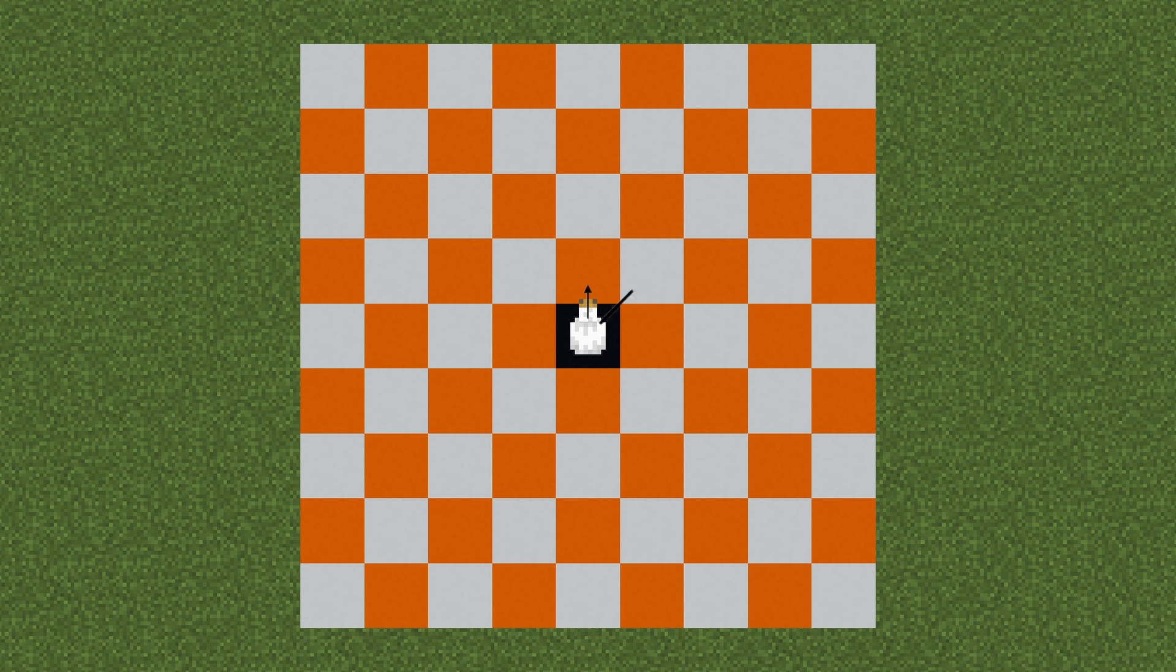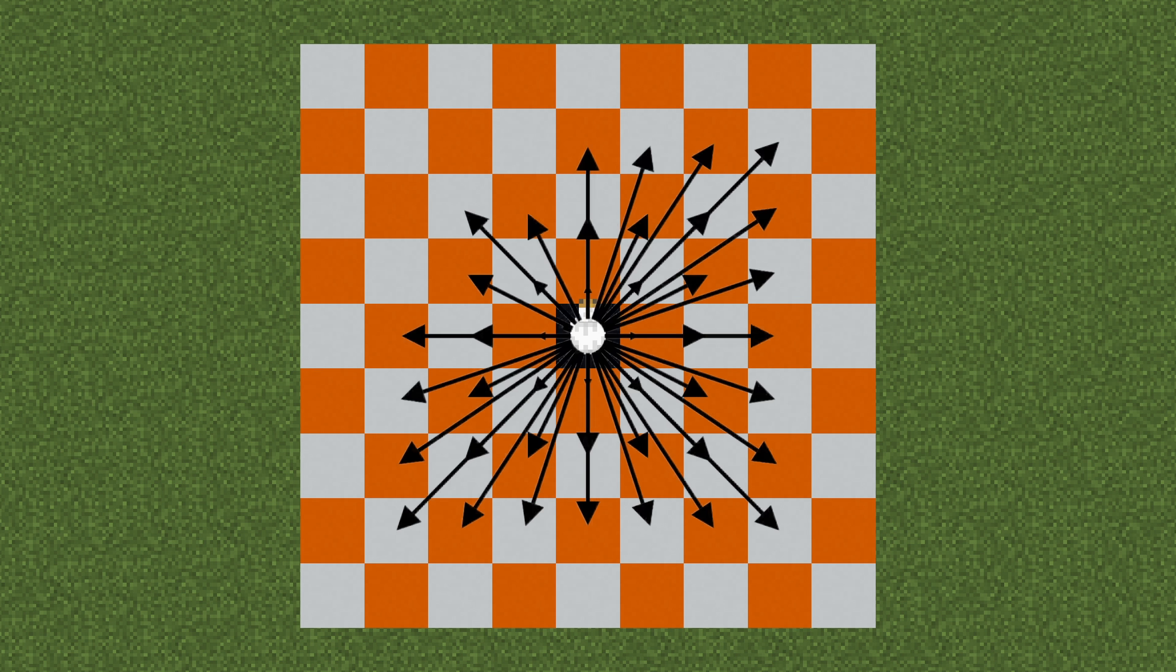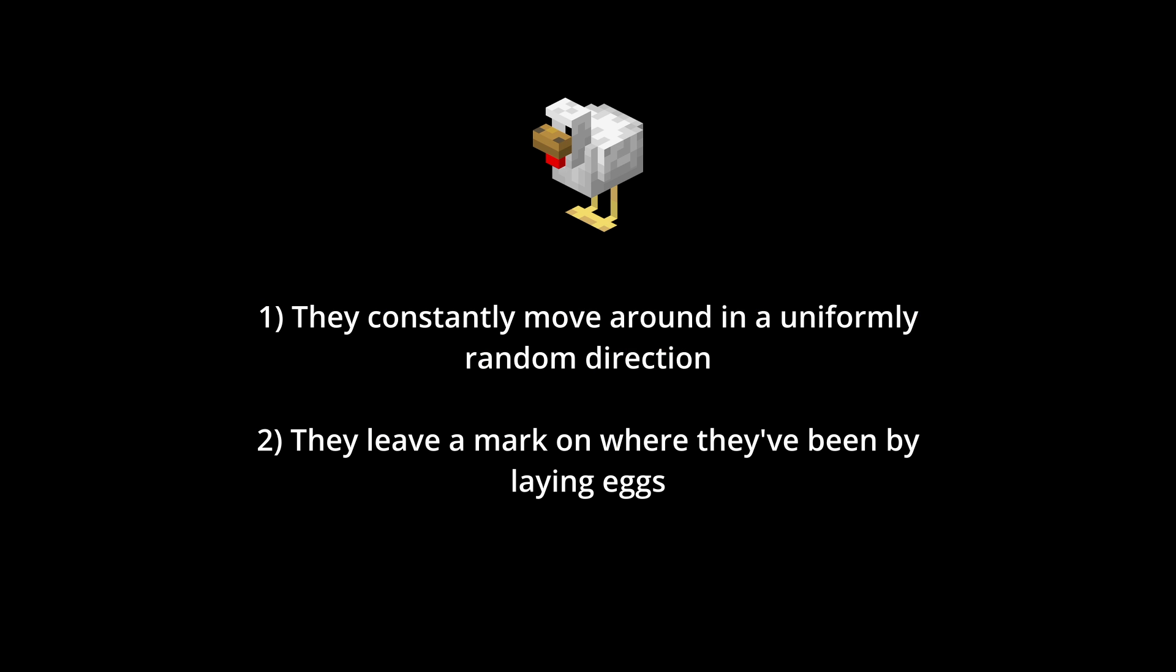Minecraft Chickens have two properties that we're going to use to calculate pi. They constantly move around in a uniformly random way, which is a fancy way of saying that they're just as likely to move from one block to another than any other block, and secondly, they lay eggs every 5 minutes or so, which leaves a mark on where they've been.